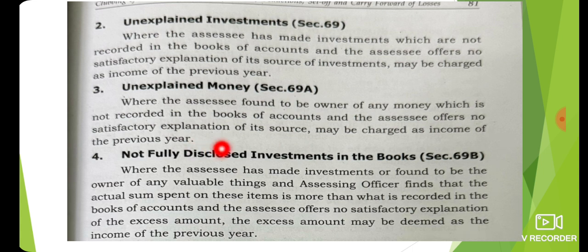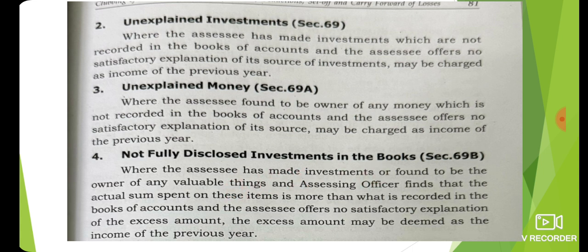Unexplained money: where the assessee is found to be the owner of any money which is not recorded in the books of accounts. Not fully disclosed investment in the books: where the assessee has made an investment or is found to be the owner of valuable things, and the assessing officer finds that the actual sum spent on these items is more than what is recorded in the books.